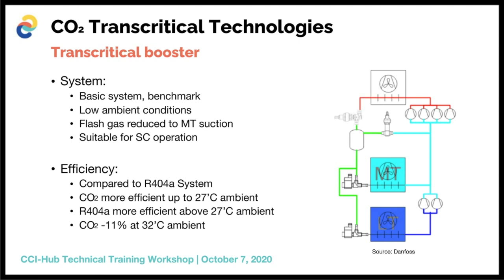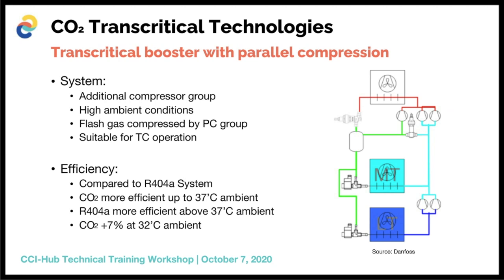One of the first steps in improving efficiency is the introduction of a parallel compression system. Instead of the flash gas created in the receiver vessel being reduced to medium temperature compressor suction and compressed from a lower pressure to discharge pressure, this flash gas is now compressed by an additional compressor called the parallel compression set, operating with suction pressure equal to receiver pressure.